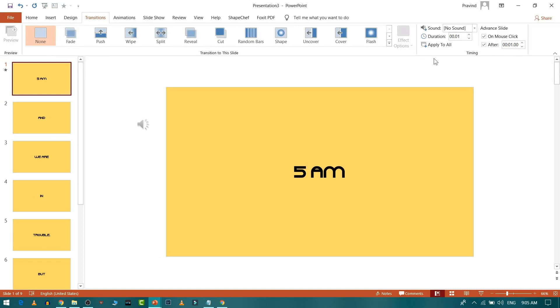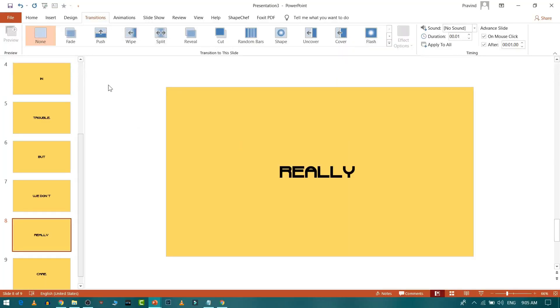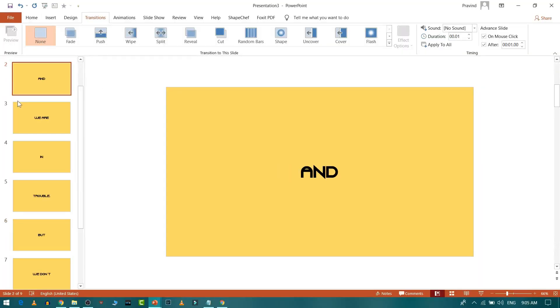Click 'Apply to All' so every slide uses the same one-second auto-advance. Playing it back, you'll see it moves from '5 a.m.' to the next slide after one second. However, '5 a.m.' needs a bit more time, so let's adjust the timing for that specific slide.